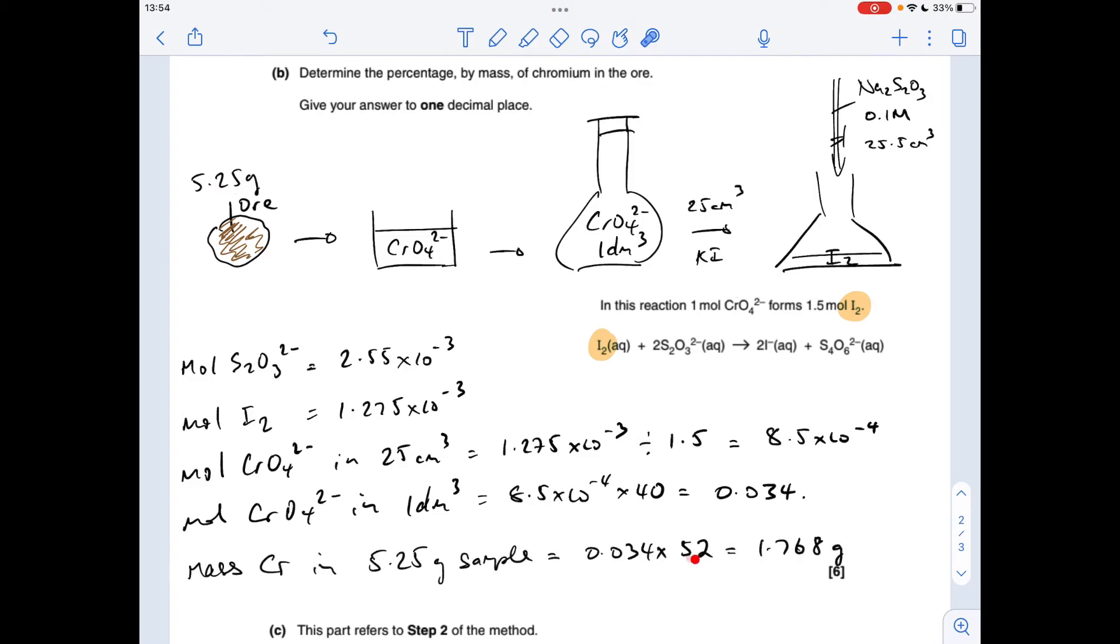So when we multiply the moles by the Mr of chromium, we know that there's 1.768 grams of chromium in that sample. All we've got to do now is put it into a percentage, which comes out at 33.7%. If you got that right, well done. If you didn't get that right, hopefully you'll have got some marks on there and hopefully what I've said makes sense.